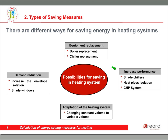We also have increase of performance without the need of installing fully new equipment, such as re-shaping chillers to reduce the temperature at which thermal exchange takes place, heat pipe insulation, or a full installation of a CHP system, which involves a huge increase of performance and saving of primary energy. And finally, adaptation of the heating system — some adaptations to match demand to building activity, such as changing constant volume to variable volume for secondary heating circuits.